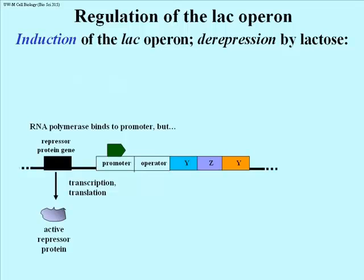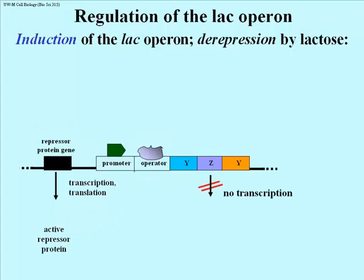Let's look at the regulation of the lac operon. There are several modes of regulation. Induction of the lac operon — turning it on — occurs by a process called de-repression. RNA polymerase sits on the promoter, but a protein coded by the i-gene, called the active repressor protein, sits on the operator and literally blocks movement of RNA polymerase, so you get no transcription. This means the operon will be inactive most of the time.